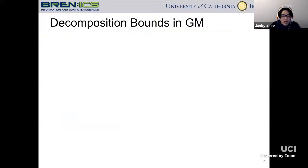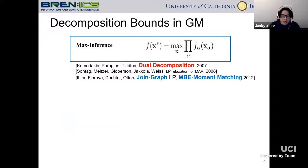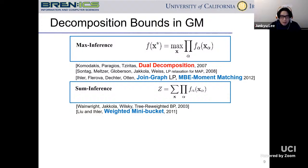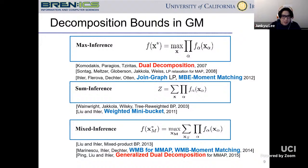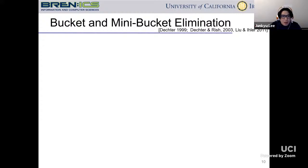Because this presentation is about decomposition bounds in influence diagrams, let me point out relevant works in graphical models. For max inference, we have the dual decomposition method as well as moment matching methods over the joint graph. For sum inference, we have the weighted mini-bucket method. For the mixed inference task, we have decomposition bounds for mixed inference that combine ideas from dual decomposition and weighted mini-bucket. We will go over the high-level ideas of all these decomposition bounds in graphical models.